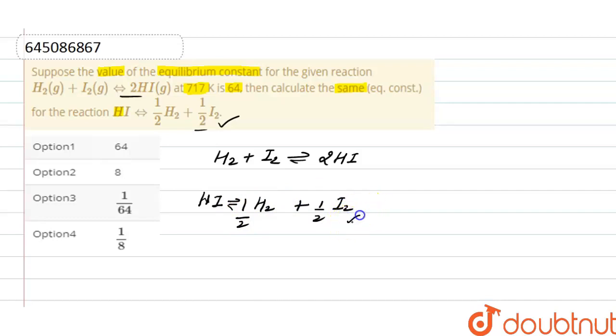And we have to find out the equilibrium constant for this given reaction. So here the equilibrium constant for first reaction is given, which is 64.